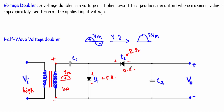Since D2 is replaced by an open circuit, there is no current flow in that branch, so capacitor C2 will not get charged during the positive half cycle. Diode D1 provides a low resistance path to charge capacitor C1, so the charging current flows through that branch. I now redraw the circuit replacing D1 with a 0.7V voltage source and D2 with an open circuit.